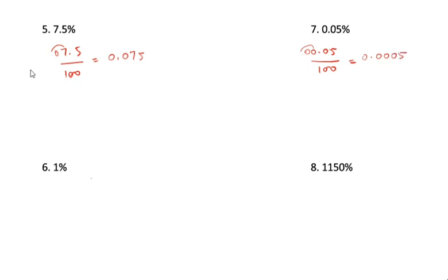Here 1 divided by 100. 1 divided by 100 — there is nothing before the decimal, so this is 1 place. You have to take another 2 places, giving 0.0 here. The answer is 0.01.